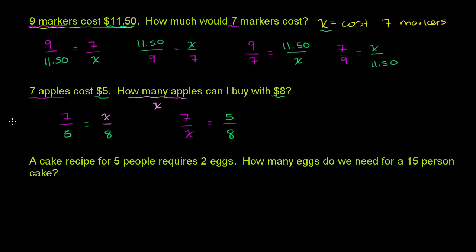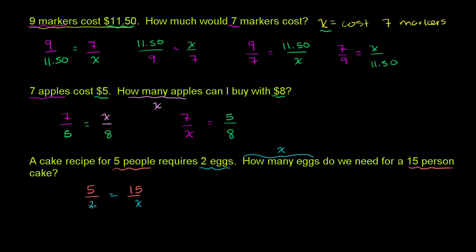Now let's do this last one. A cake recipe for five people requires two eggs. How many eggs do we need for a 15-person cake? So we'll call that x — you could call it y, z, or any variable. You could say the ratio of people to eggs is constant: five people for two eggs, then for 15 people we are going to need x eggs. This ratio is going to be constant — five over two is equal to 15 over x.